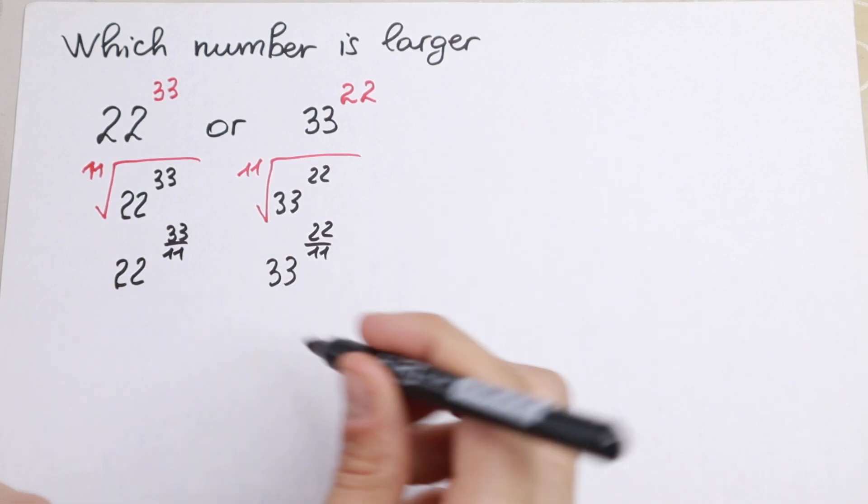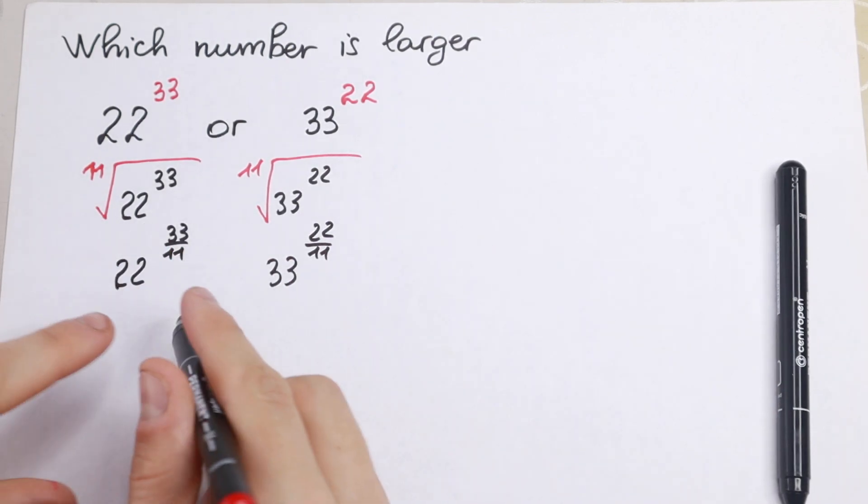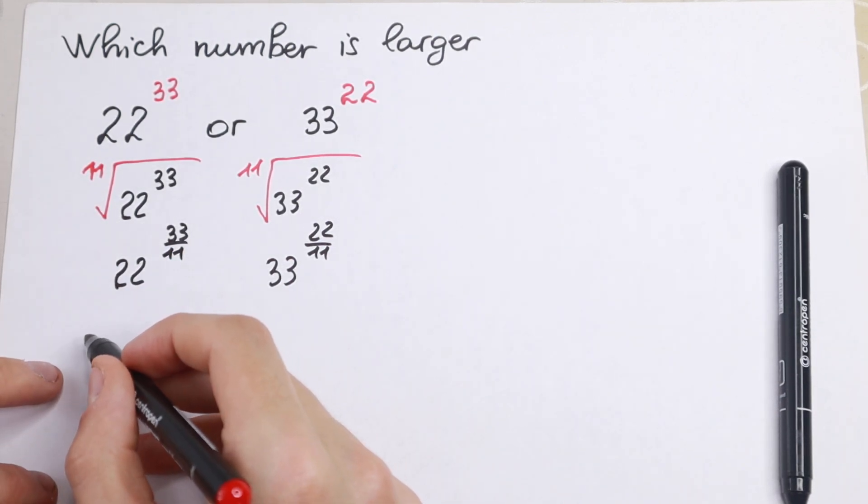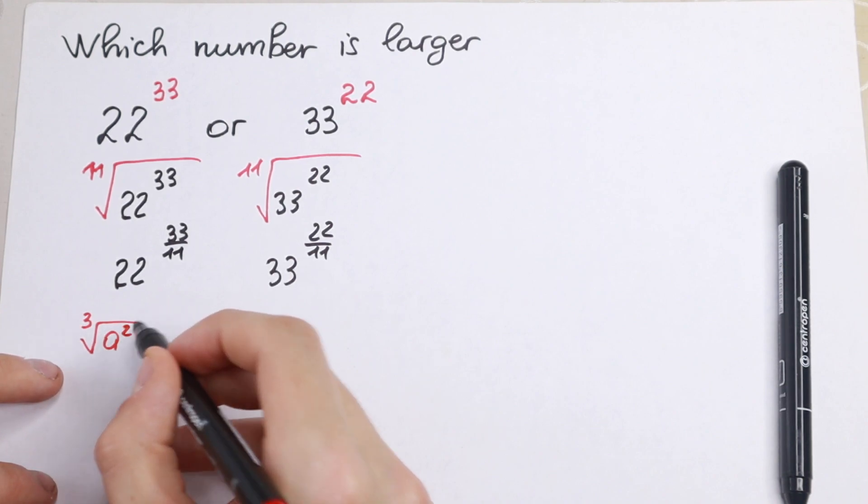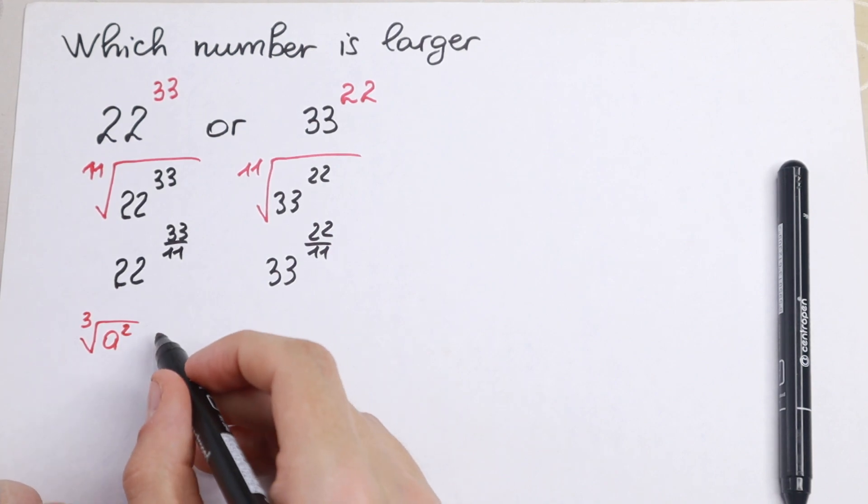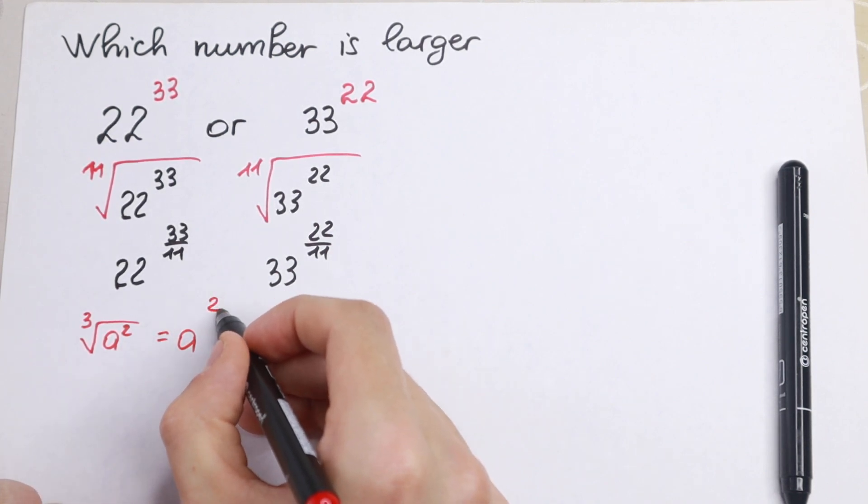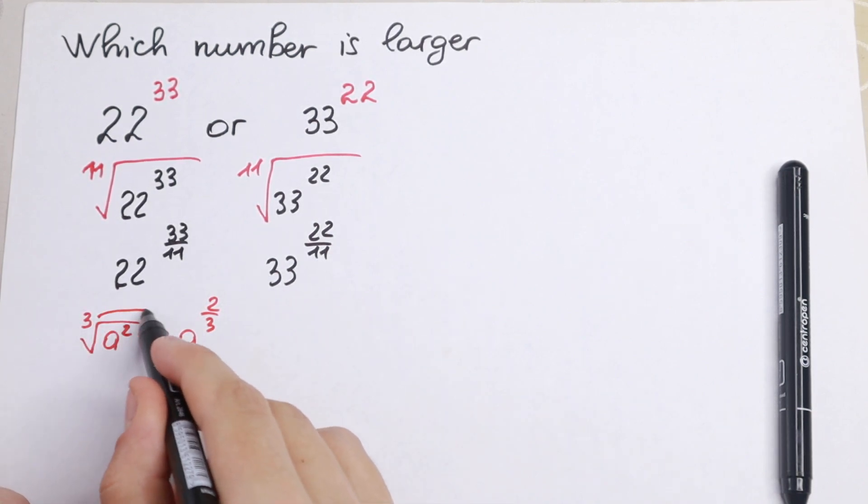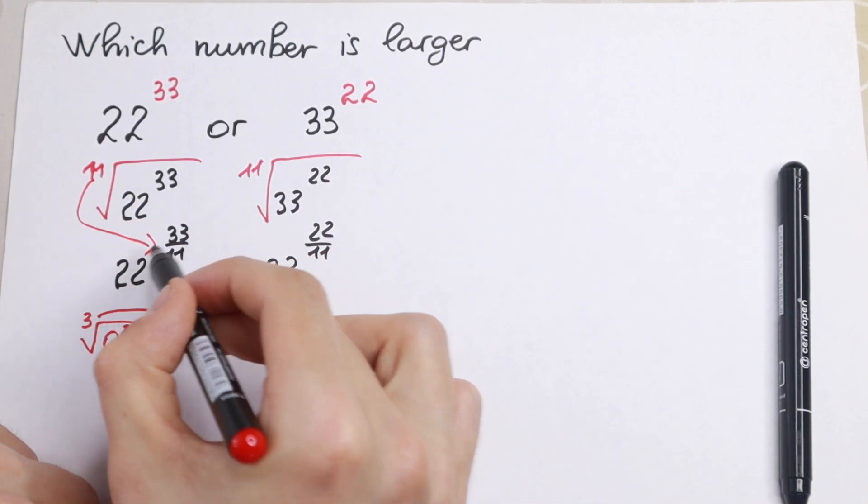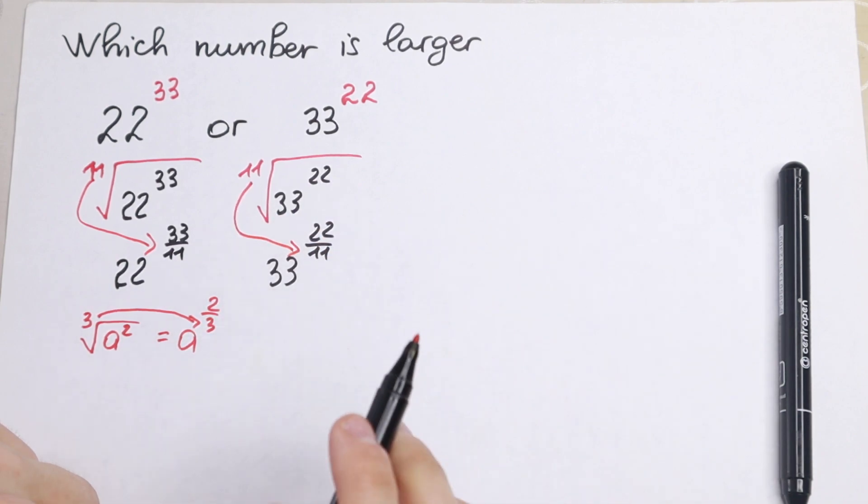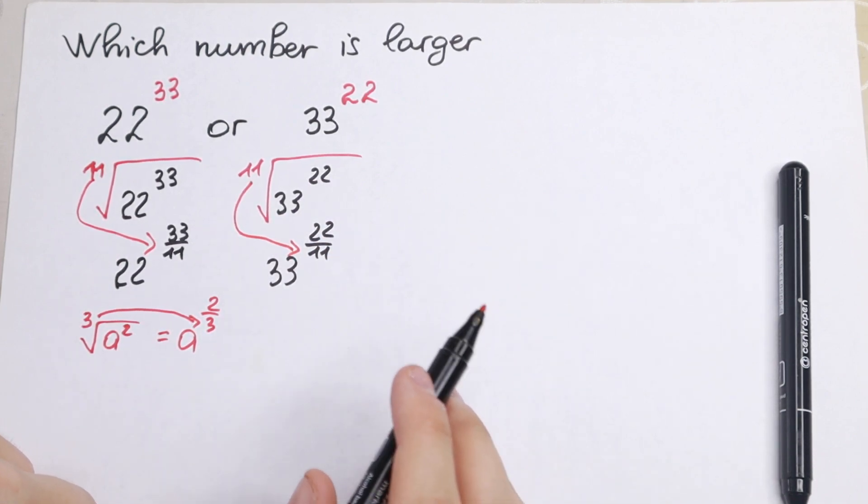I hope you understand this. If you don't understand why I write this in our denominator, for example if we have a cube root of a squared, we can write it as a to the power 2/3. This 3 goes to our denominator. So I write this 11 right here, 11 right here, and 11 right here. I hope you understand this step.